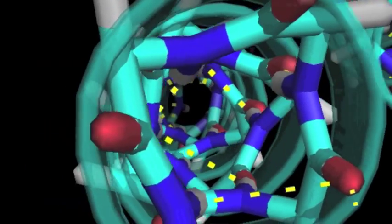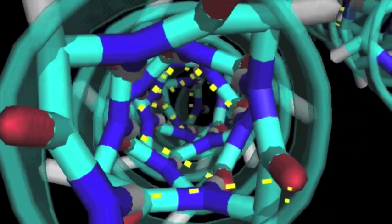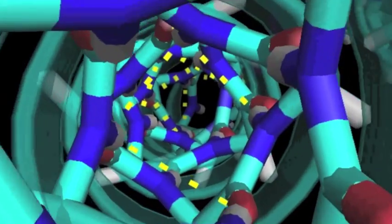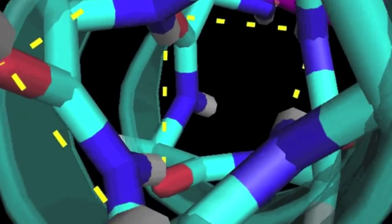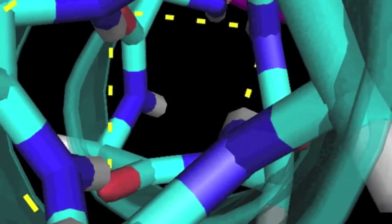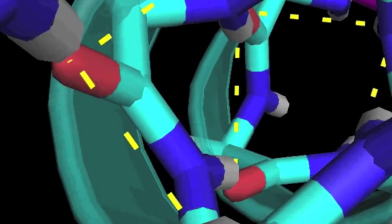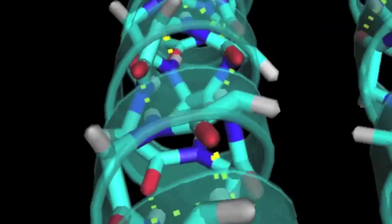If we flip the structure around so that we're looking from the C terminus towards the N terminus, we see the same hydrogen bonds, but in this case the carbonyl oxygens in red are pointed towards us and we see the amide hydrogens pointing away from us.